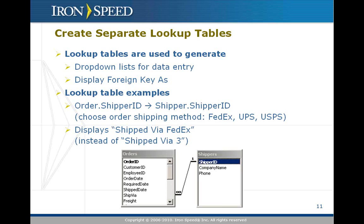Step two is to create separate lookup tables. IronSpeed Designer automatically joins to these lookup tables and uses them to create, for example, drop-down lists on data entry pages, and on display pages will display the text version of your lookup entry value rather than the ID value.